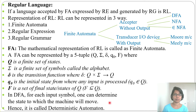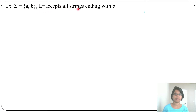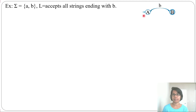Let the alphabet be {a, b} and the language L accept all strings ending with b. All strings ending with b means it will accept single b, then ab, bb — any string ending with b. It will be in two states. The starting state is always marked with an arrow and the final state with a double circle. Taking states as A and B, from state A by input b it goes to state B, because it accepts minimum one b. From state A with input a, it goes to A itself, since there can be any number of a's before the ending b. From state B by input b it stays at B, and by input a it goes back to state A.